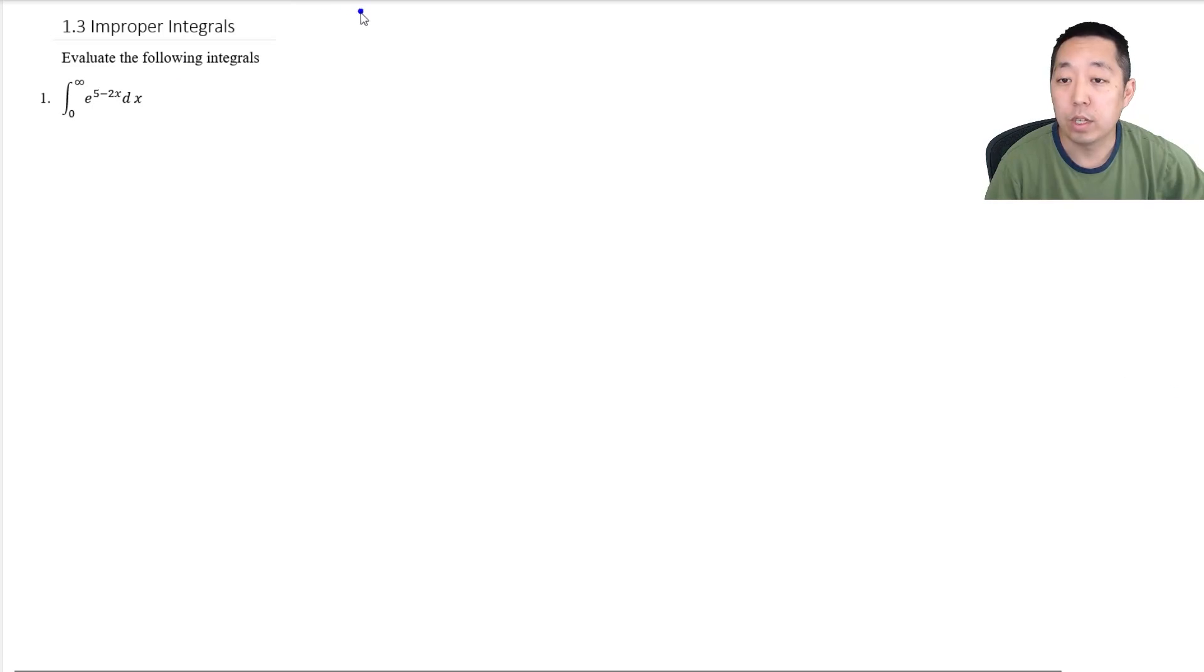Now we're going to be looking at how we solve improper integrals. In general, when you have improper integrals, it means integrals that usually go over approaching an asymptote or approaching infinity. In this case, exponential curves look pretty normal, but I'm doing an integral to infinity.